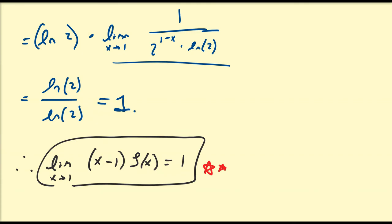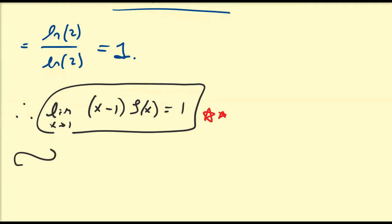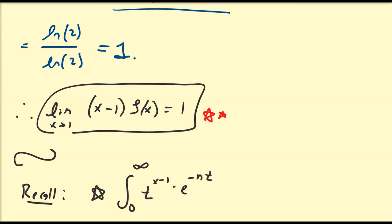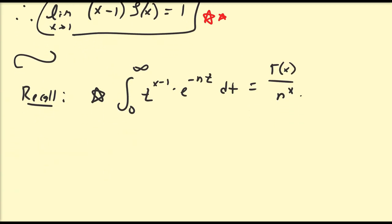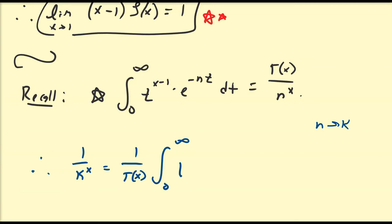Now let's develop the integral representation for the Dirichlet eta function. Recall a property used to derive the integral representation for the Riemann zeta function: the integral from 0 to infinity of t^(x−1) times e^(−nt) dt, where n is a positive number, equals the gamma function divided by n to the power of x. Rearranging and setting n equal to k, we get 1/k^x equals (1/Γ(x)) times the integral from 0 to infinity of t^(x−1) times e^(−kt) dt.